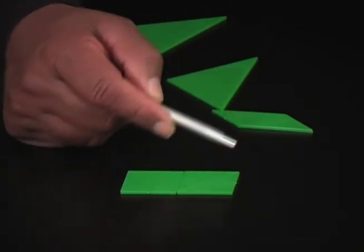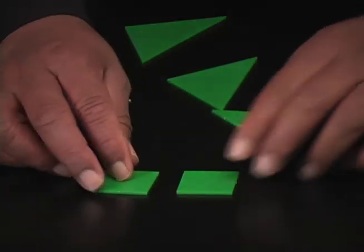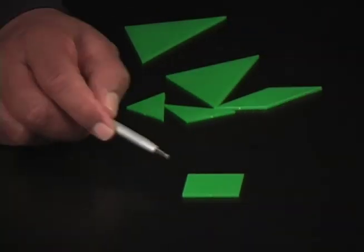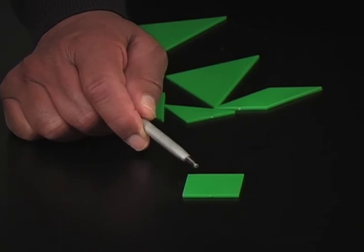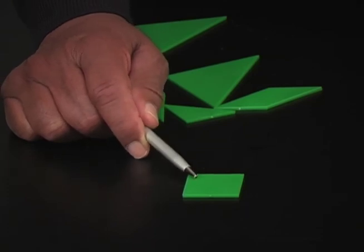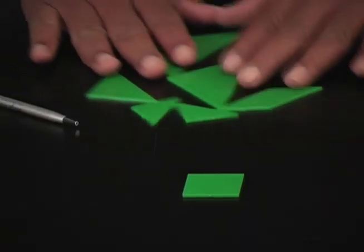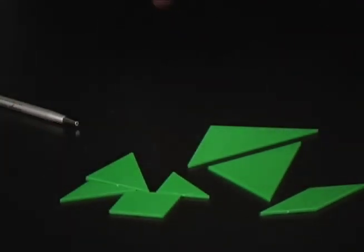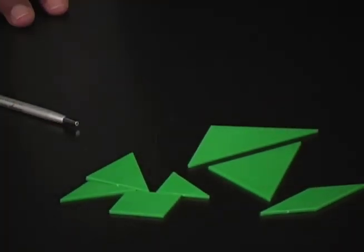And so we can deepen the students' understanding. It's just like, what's the name of this shape? Is it just a square? Is it a parallelogram? Is it a rectangle? Is it a trapezoid? So with these pieces, we can do a lot of spatial sense and geometry with the students.